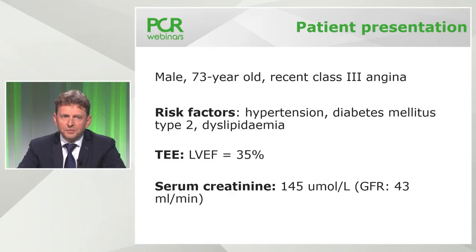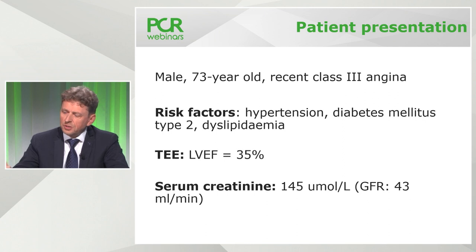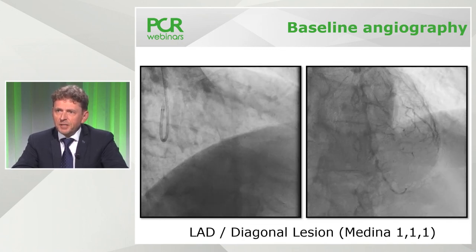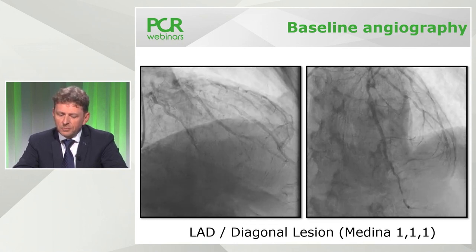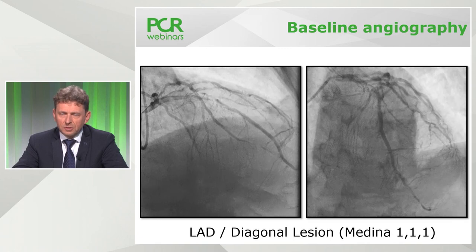Let me show the case of a 73-year-old male patient with recent Class III angina — very symptomatic — with risk factors including hypertension, diabetes type 2, and dyslipidemia. With LV impairment — we don't know for certain, there was no history of previous MI, but this patient must have had MI in the past. Serum creatinine was elevated with a GFR of 43 mL/min. This is the baseline angiography performed from radial approach with diagnostic catheters. You can clearly see a tight lesion in the mid portion through the LAD-diagonal bifurcation.